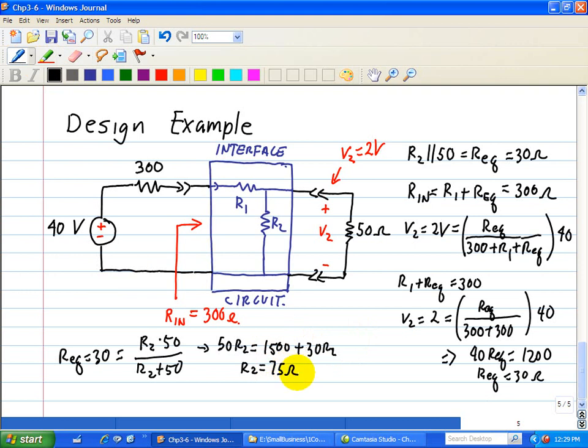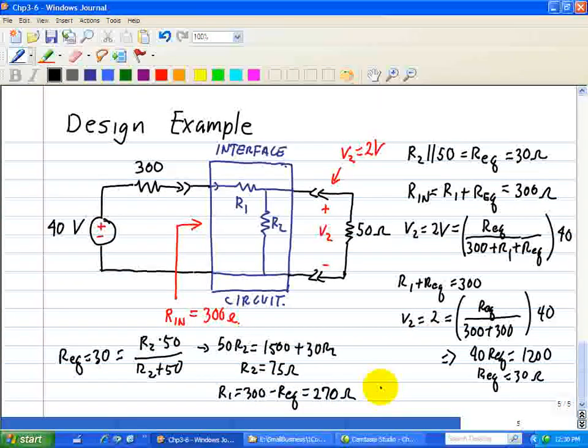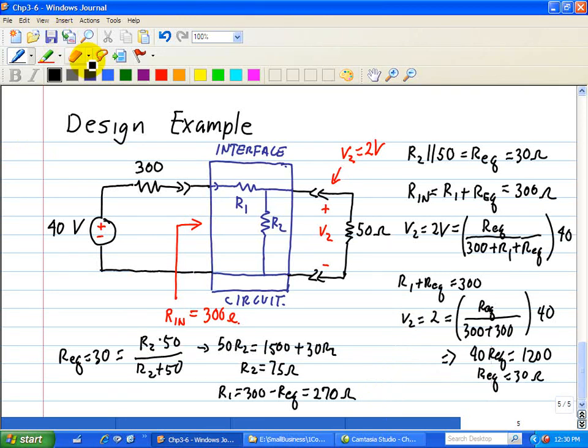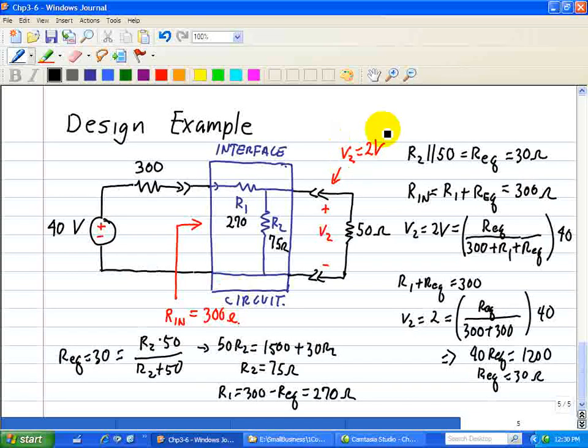Now since REQ is equal to 30 ohms, the input port constraint then tells us that R1 is equal to 300 minus REQ which is 270 ohms. Now we have R1 is equal to 270 ohms and R2 is equal to 75 ohms. And this design satisfies both the input constraint of 300 ohms and the output constraint of 2 volts.